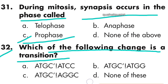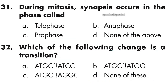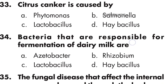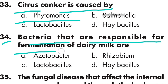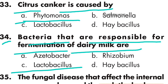Question 33: Citrus canker is caused by Phytomonas — option A is correct. Question 34: Bacteria that are responsible for fermentation of dairy milk are Lactobacillus — option C is correct.